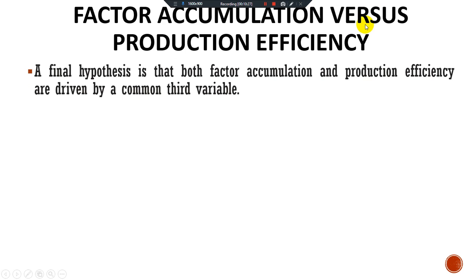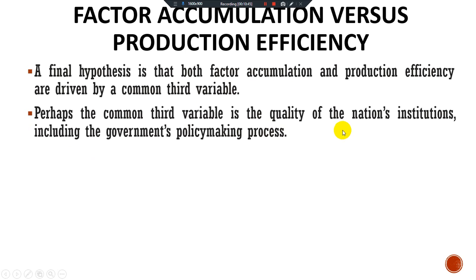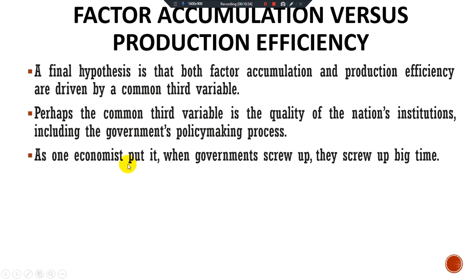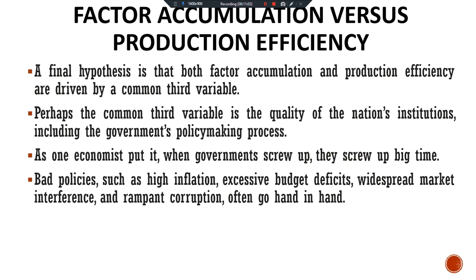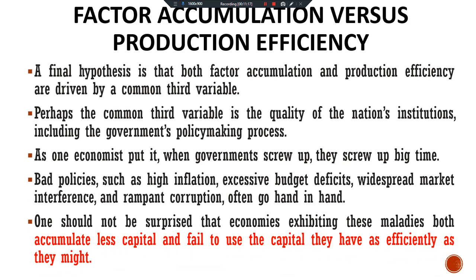A final hypothesis is that both factor accumulation and production efficiency are driven by a common third variable — perhaps the quality of the nation's institutions, including the government's policy-making process. As one economist put it: when governments screw up, they screw up big time. Bad policies such as high inflation, excessive budget deficits, widespread market interference, and rampant corruption often go hand in hand. One should not be surprised that economies exhibiting these maladies both accumulate less capital and fail to use the capital they have as efficiently as they might.